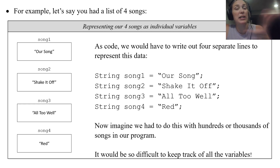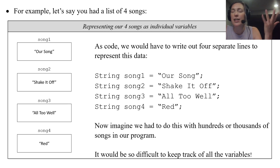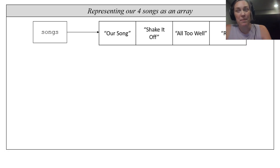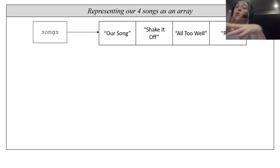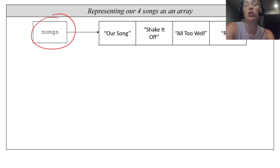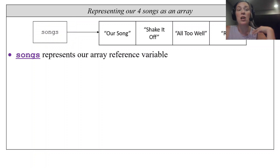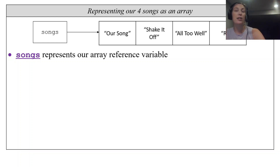You can see a pattern — song one, song two, song three, song four — but you have to create a line of code for each, plus keep track of everything. With an array, instead of four individual variables I just have one variable called songs. That reference variable holds all four songs, so I just have one variable to keep track of.